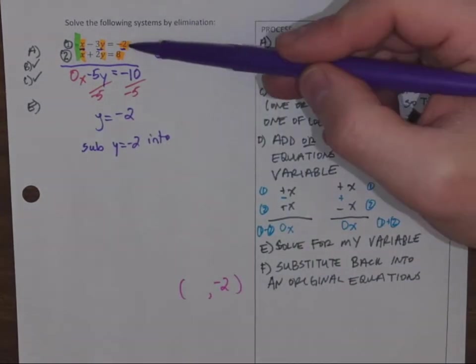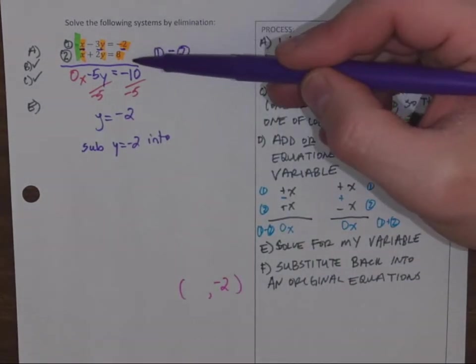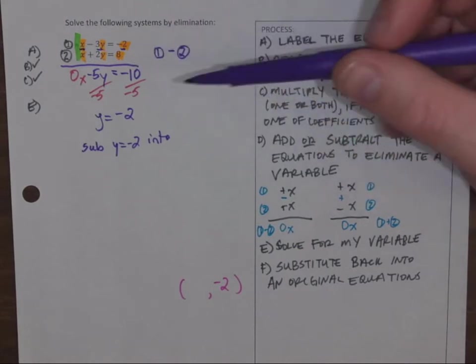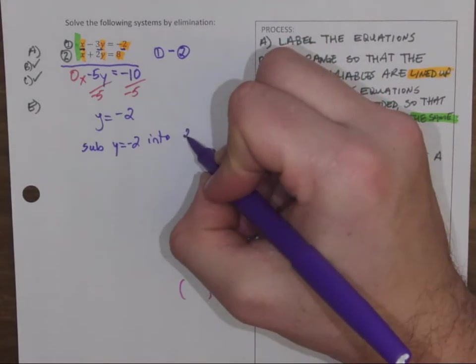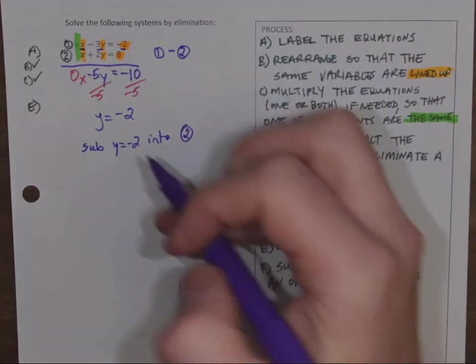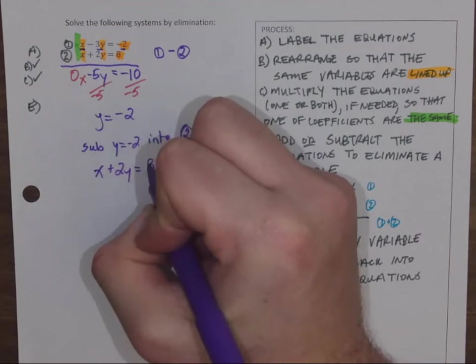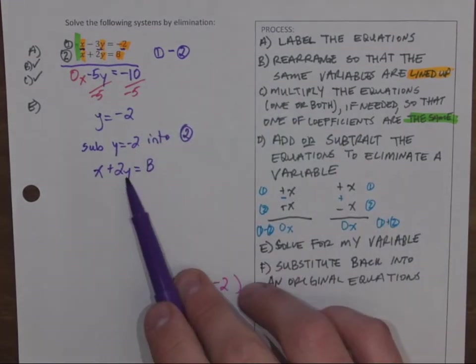And specifically that variable I just found. To keep my communication, I'm going to say sub Y equals negative 2 into, and I'm going to tell you which one I'm subbing it into, equation 1 or equation 2. It doesn't matter which one I sub it into, I will get the same answer. I'm going to choose equation 2 right now. So here's equation 2, X plus 2Y equals 8. Everywhere I see Y, I'm going to put negative 2.